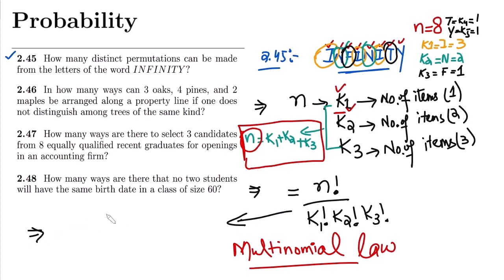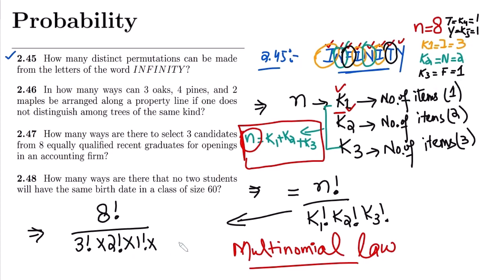Now applying the formula: n factorial is 8 factorial, divided by k1 factorial which is 3 factorial, multiplied by k2 factorial which is 2 factorial, multiplied by k3 factorial which is 1 factorial, multiplied by k4 factorial which is 1 factorial. We can verify: 3 plus 2 is 5, plus 1 is 6, plus 1 is 7, plus 1 is 8 — so the condition n equals 8 is fulfilled.